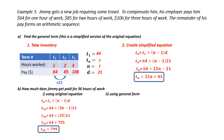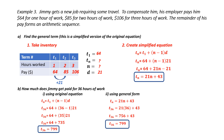Now using the general formula, t_n equals 21n plus 43. I'm still looking for t₃₆, so I substitute 36 in for n. BEDMAS: 21 times 36 is 756. Then 756 plus 43 gives me 799. Using both methods, the 36th term is also 799. Therefore, Jimmy earned $799 when working 36 hours, confirming that my general form is correct.